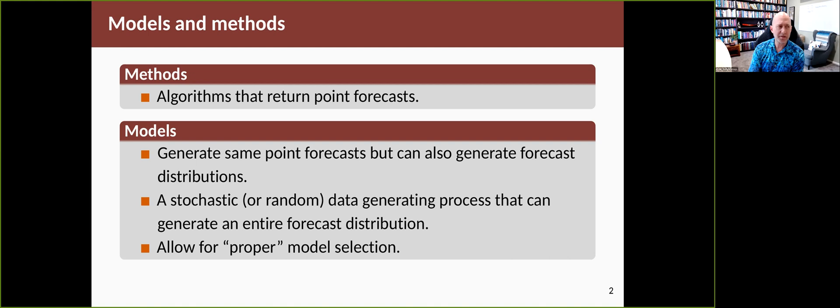So the methods that we've shown so far, we've called them methods rather than models, they're simply algorithms that will return a point forecast. And although we fitted them using the model function and we showed prediction intervals when we were looking at graphs, the equations we showed were actually just methods that generated point forecasts. We're now going to talk about the models that actually underpin them, and which we use to show those prediction intervals.